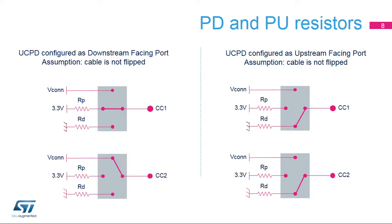The UCPD is configured by software as either a downstream-facing port or an upstream-facing port. In DFP mode, assuming no cable flip, CC1 is connected to RP; the value of RP indicates the default power the DFP can source on VBUS. CC2 is connected to VCONN, a 5-volt, 1.0-watt power supply used to power devices within the plug for electronically marked cables and VCONN-powered accessories. In UFP mode, assuming no cable flip, CC1 and CC2 are connected to RD, which is a 5.1-kilohm resistor. Since the UCPD supports both DFP and UFP operation, internal switches select the current configuration.